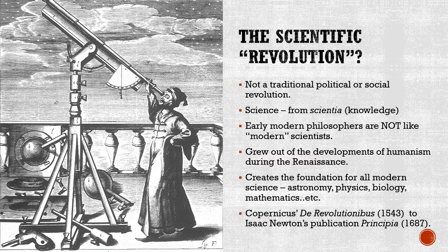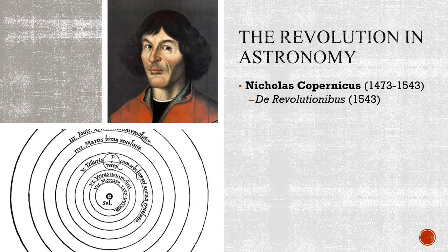Historians traditionally date the Scientific Revolution from the publication of Copernicus's De Revolutionibus in 1543 to its pinnacle — Isaac Newton's Principia in 1687. Principia lays the foundations of modern physics: the laws of motion and the theory of gravity that allow us to have satellites in space and that enabled the moon landing. The Scientific Revolution begins with Copernicus, who published De Revolutionibus in 1543.